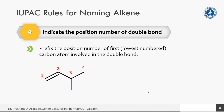Rule number four: indicate the position number of the double bond. Always prefix the position number of the first carbon atom involved in the double bond — that is, the lowest-numbered carbon involved. In the example, the double bond involves carbon atoms one and two, so the lowest is one. Prefix this number to the name: the compound is named 1-butene.